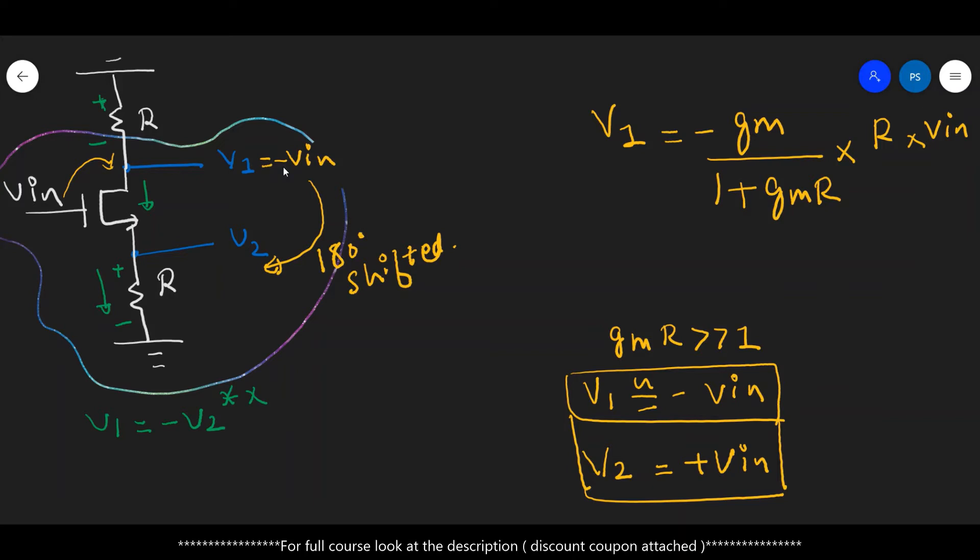Now what will be the voltage V2? We do not have to calculate exclusively what is the voltage V2, because if you look at the circuit, whatever current is flowing here into this resistance R, the same current will flow through this resistance also.